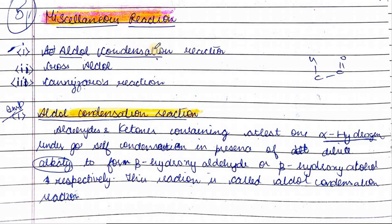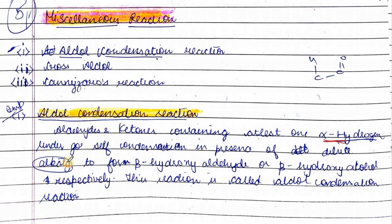In aldol condensation, what is important is that only aldehydes and ketones which have alpha hydrogen atoms can undergo this reaction. Alpha hydrogen atoms is the necessary condition. In the presence of dilute alkali, they undergo self condensation to form beta hydroxy aldehydes or beta hydroxy ketones. This reaction is called aldol condensation reaction.